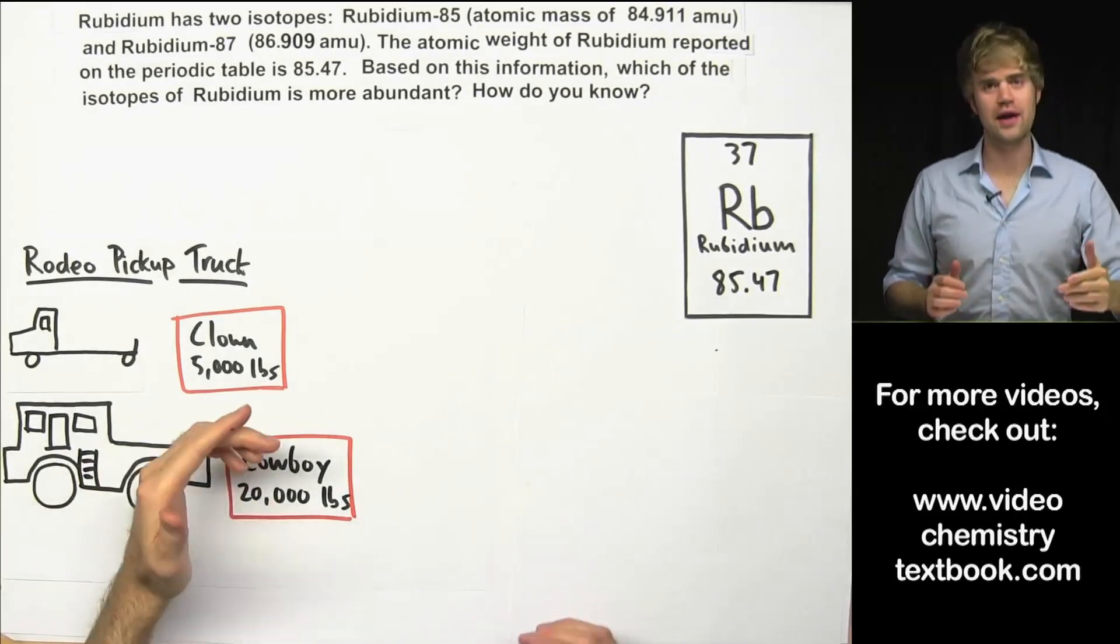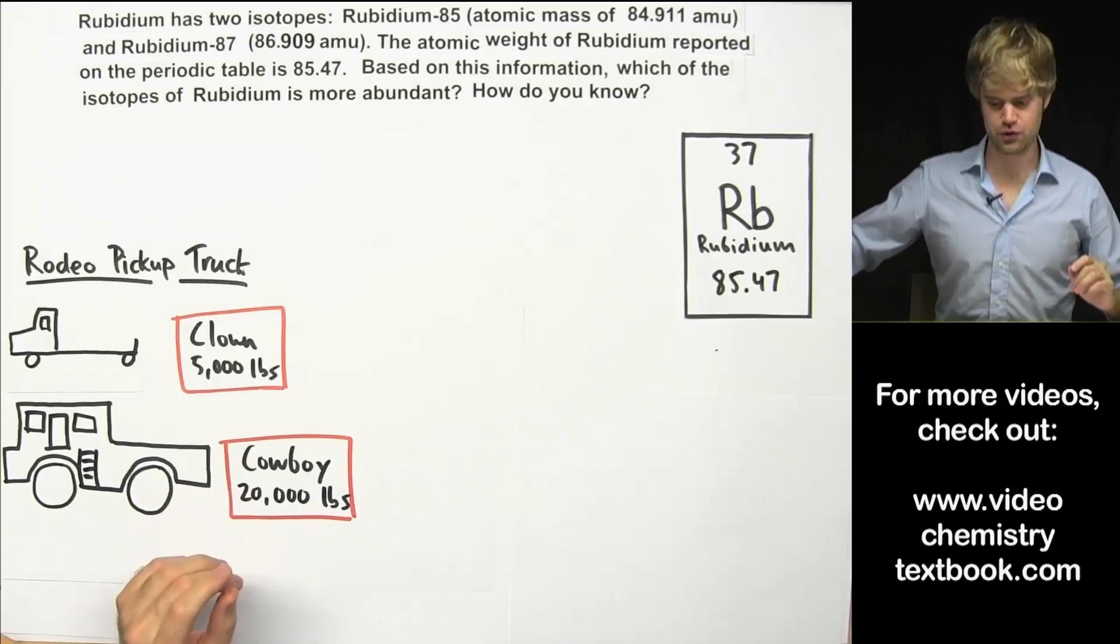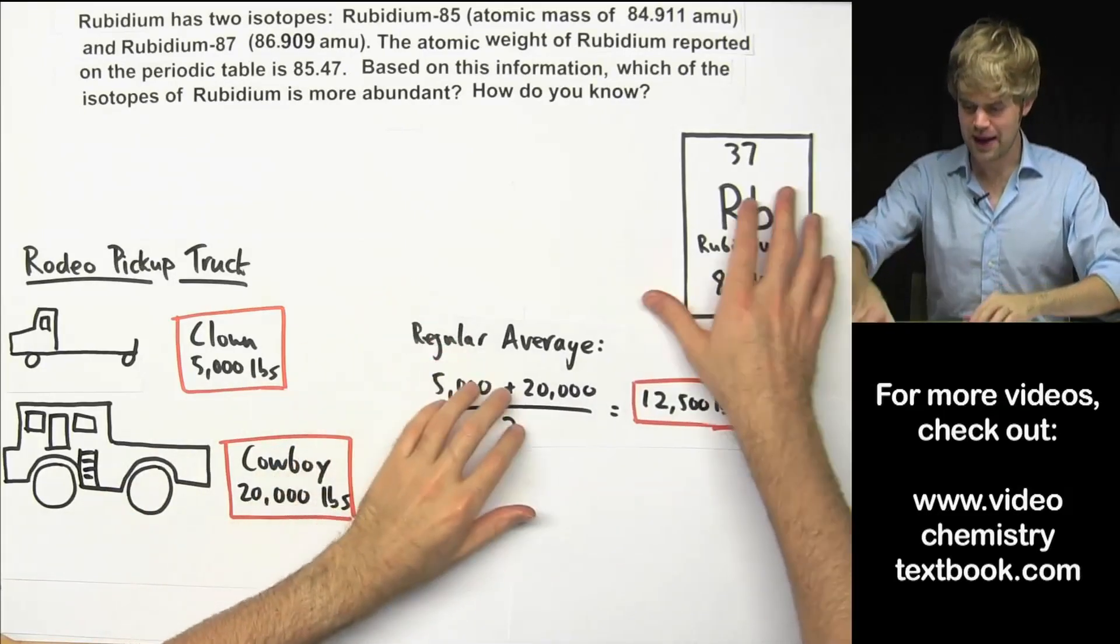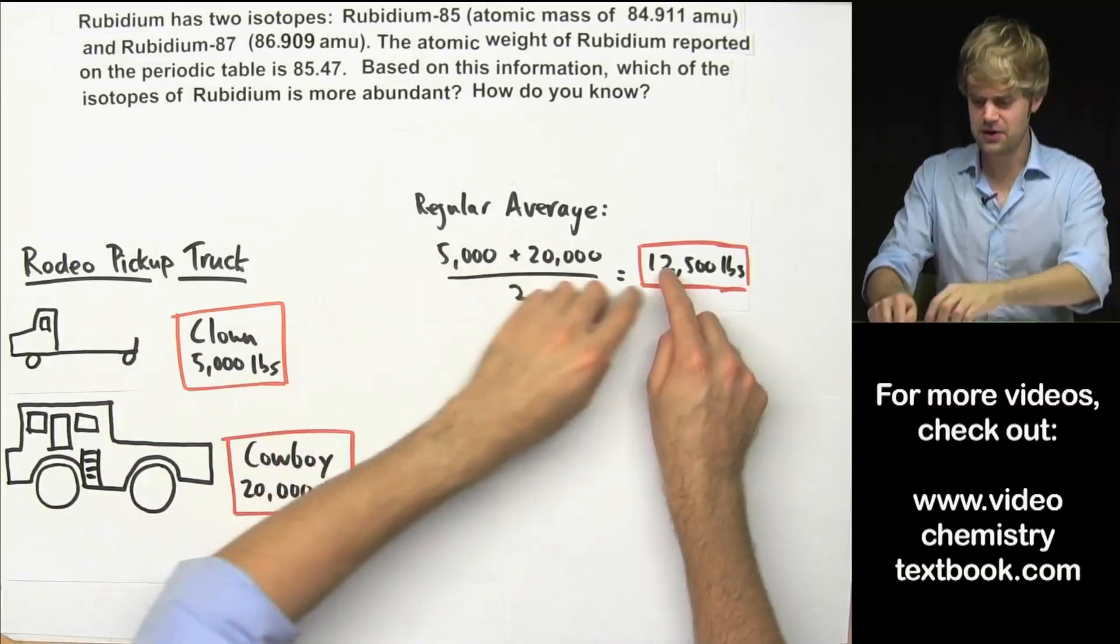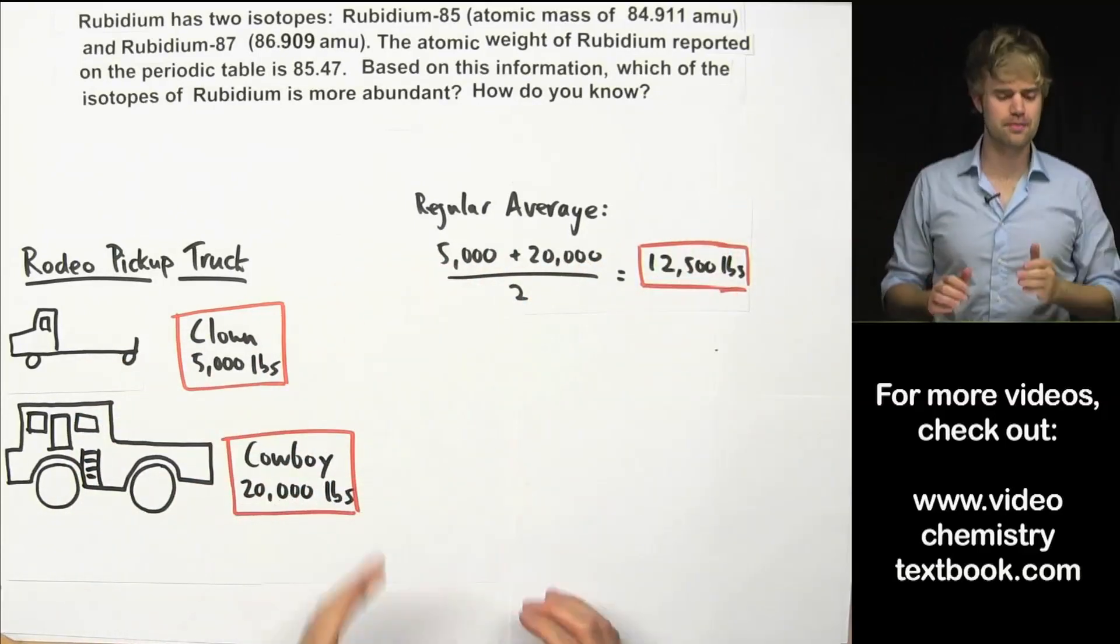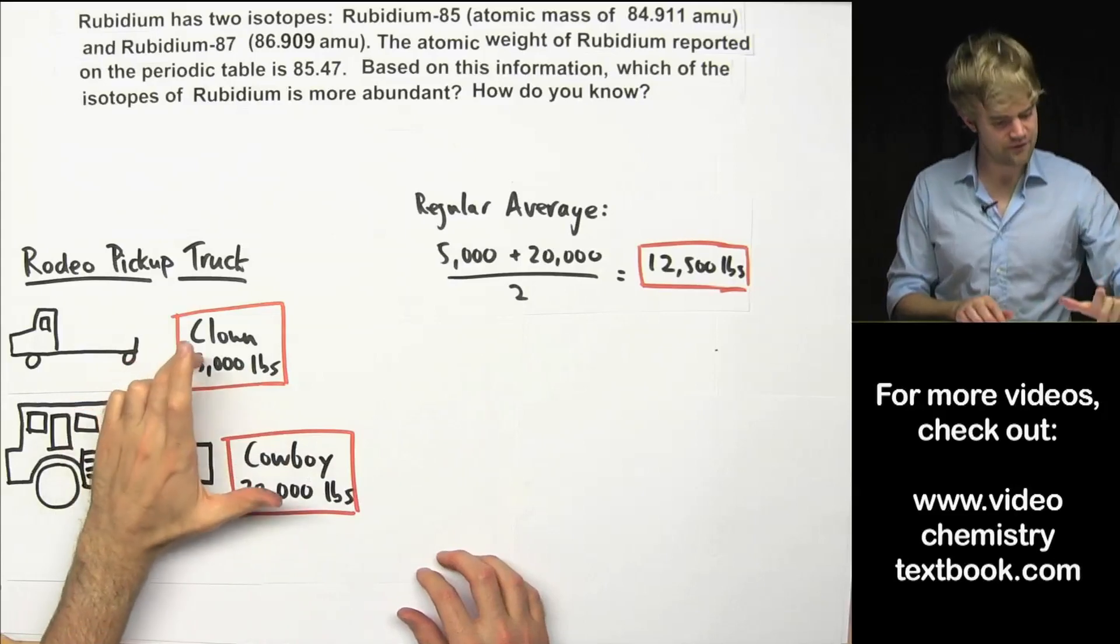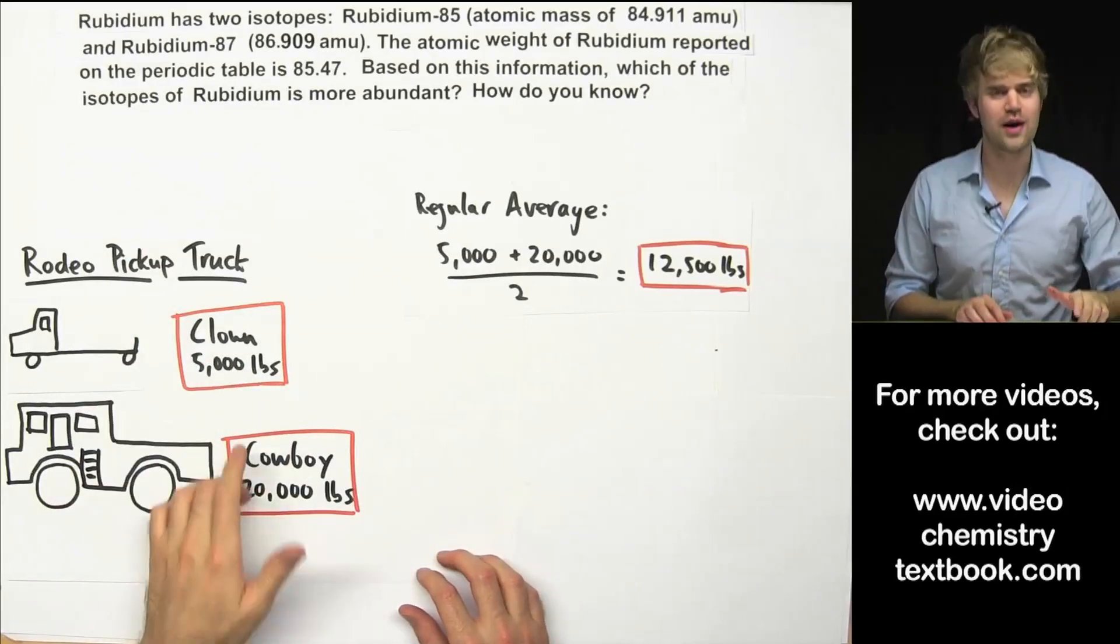Now, what is the average weight of these two pickup trucks? If I said average weight, what you'd probably do is you would add the two weights together and divide by two, and you get 12,500 pounds, which is right in between 5,000 for the clown and 20,000 for the cowboy.